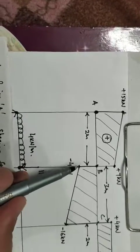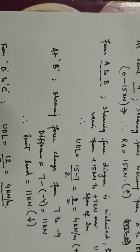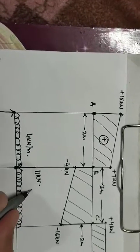From point B to C there is an inclined line, meaning there is also a UDL from B to C. The shear force changes from minus 4 to minus 16, a difference of 12 kilo Newton over a span of 3 meters. So the UDL is 12 divided by 3, which is 4 kilo Newton per meter from point B to C.